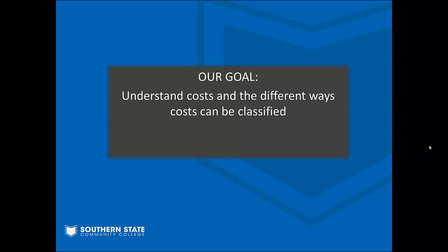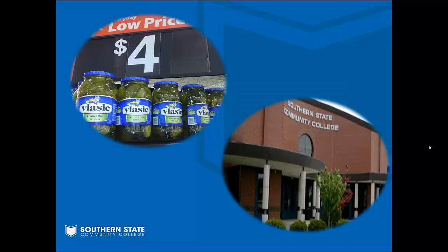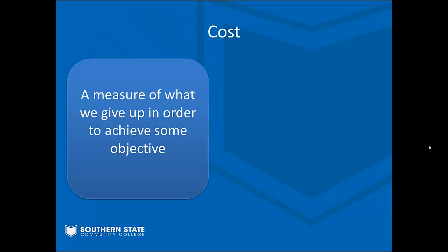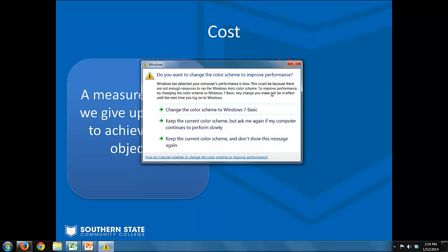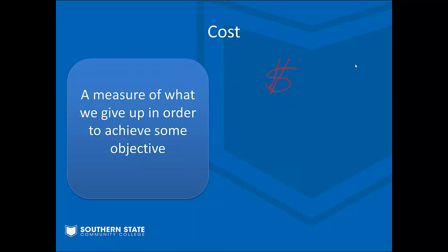Our goal in today's lecture is to understand cost and the different ways that they can be classified. You undoubtedly have an idea of what a cost is — if you've ever been to the grocery store, you pay a cost for your groceries, and tuition here at the college is a cost. To put a formal definition to it, a cost is a measure of what we give up in order to achieve some kind of an objective. Normally we measure them in dollars, though we can also measure cost in terms of opportunity cost. What we'll focus on here is the dollar side of things.